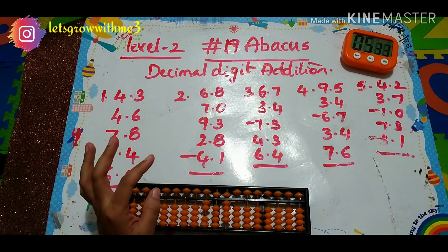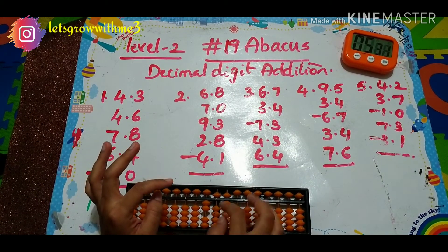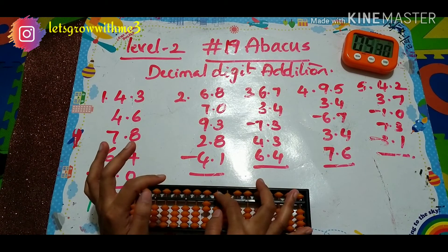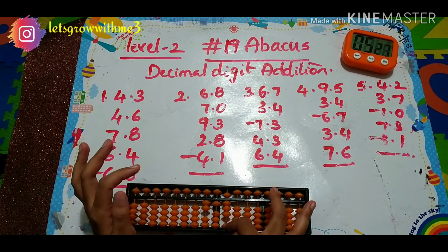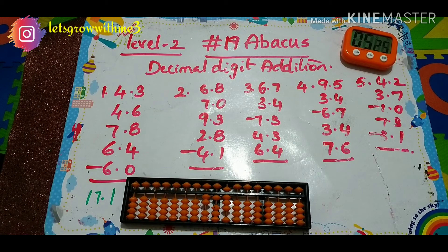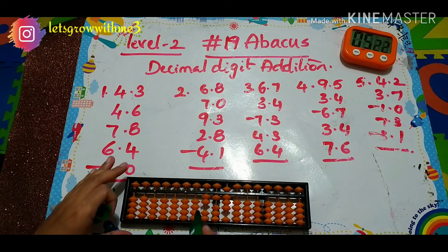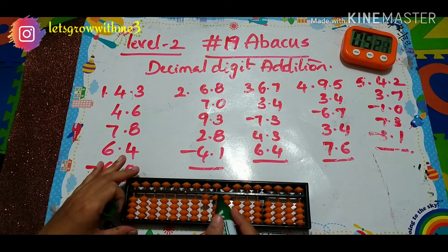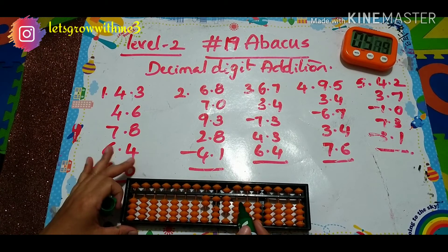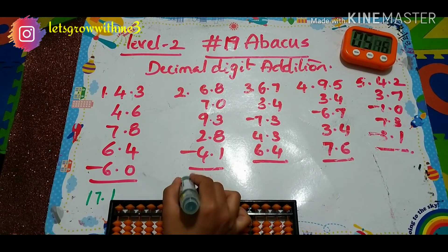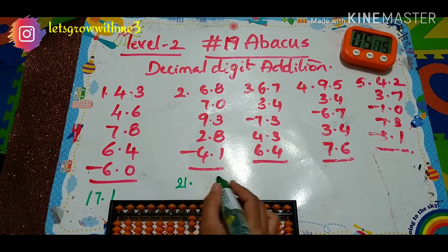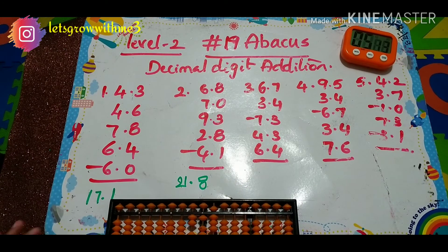Next minus 4.1 — so I must do in one's place minus 5 plus 1. Next I should add 1 here, then subtract 1 here: minus 10 plus 1. So the answer is 21.8.